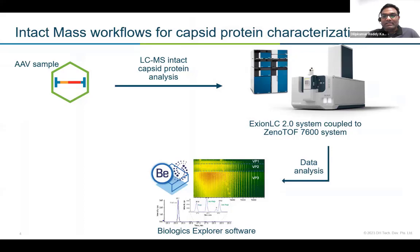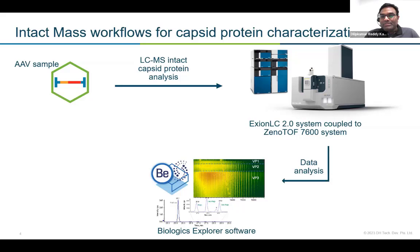Let's begin with the intact protein molecular determination using the SciEx Zenote 7600 instrument. Here you can see the high-level schematic of the intact mass determination workflow for capsid protein characterization. For intact mass analysis, sample preparation is very fast. It involves a first step of denaturation to break apart the capsid, followed by a buffer exchange to remove buffer components that could interfere with ionization on the mass spec. We have implemented an LC approach with analytical flow connected with the Zenote 7600 system to acquire the data sets, then processed them using software called Biologics Explorer. I'd like to switch to the SciEx OS software to demonstrate how easy it is to set up the method for determination of the molecular weight of the AAV8 capsid protein.